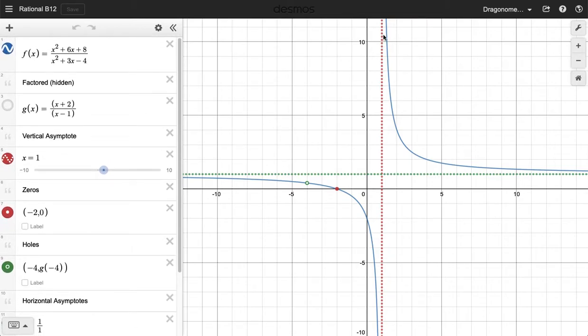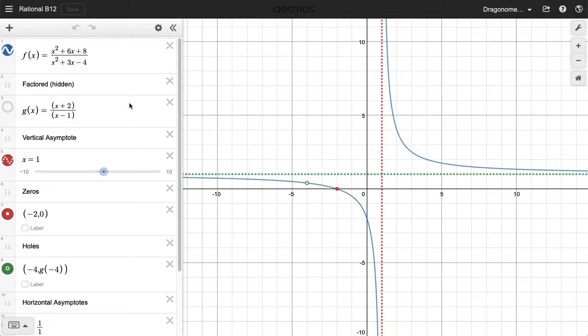So the rational function itself is the blue curve, the two branches there. The vertical asymptote is the red dotted line. The horizontal asymptote is the green dotted line. The red dot is the 0 for this function. And the green hole is the hole or missing point in this function.